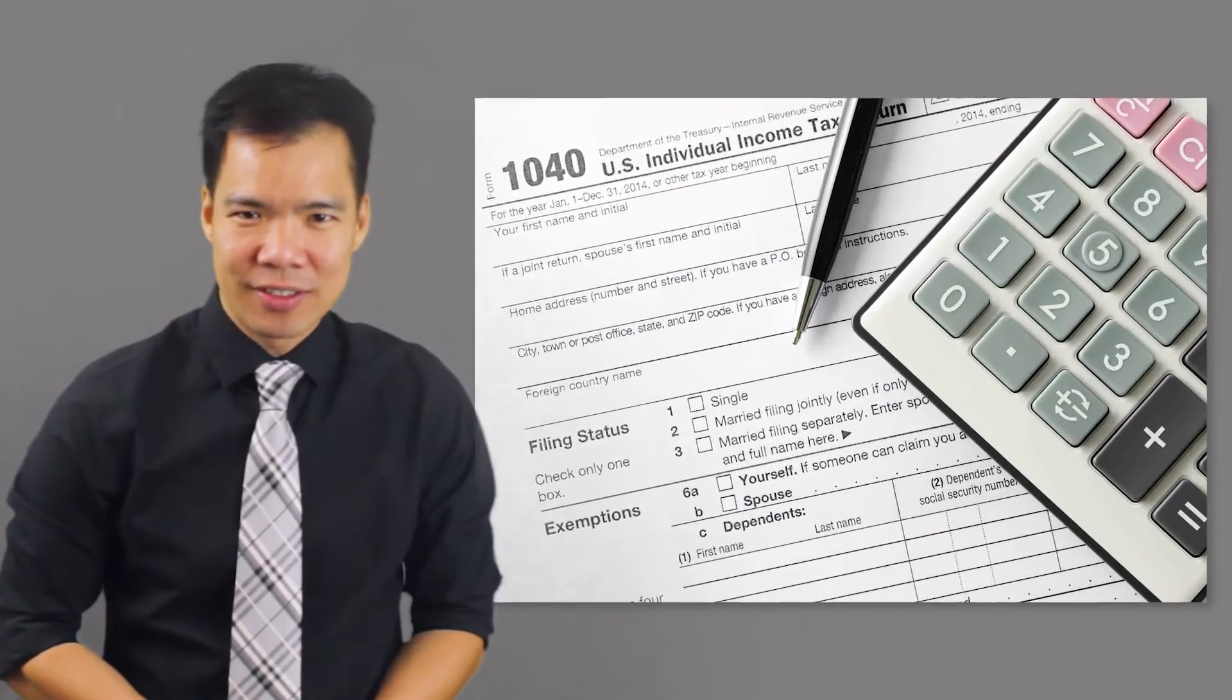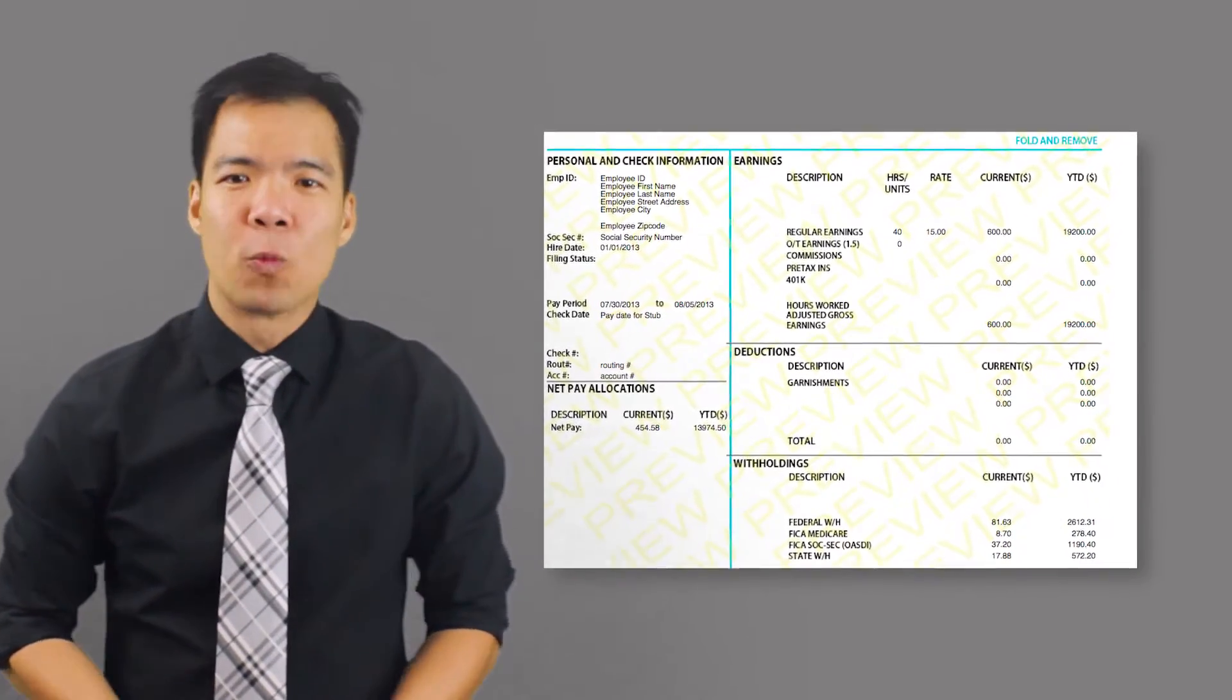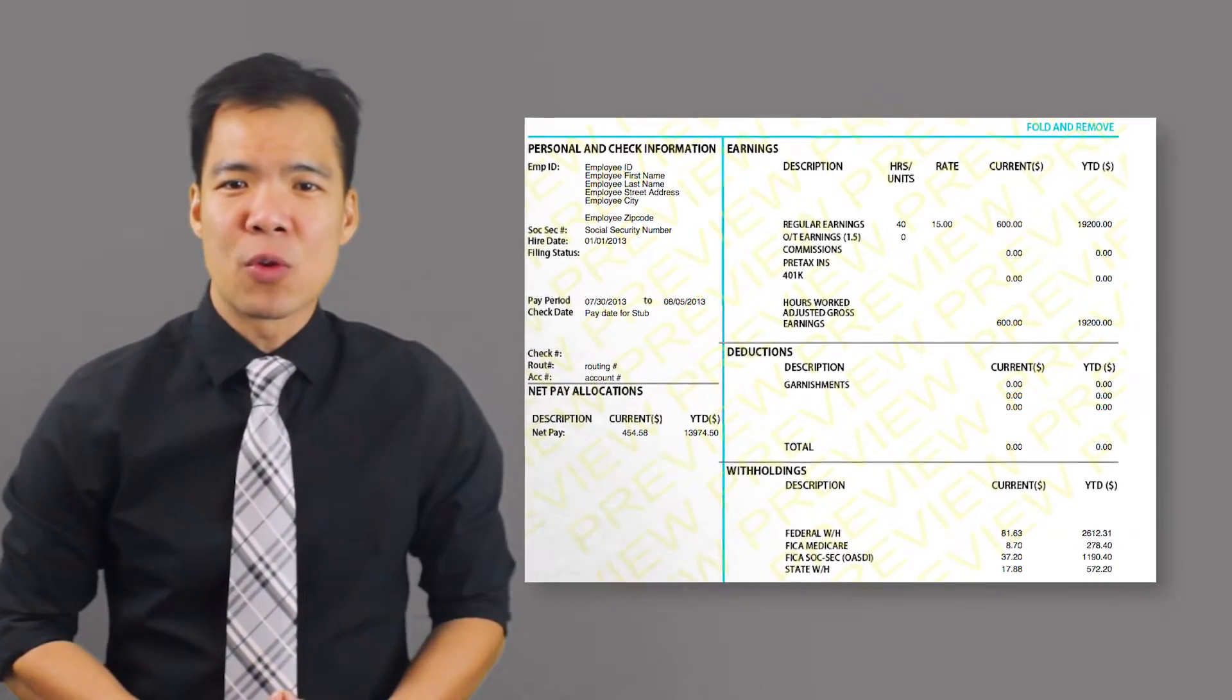two years tax return, and if you're employed under a company, two of the most recent pay stubs. With that info, your lender will tell you what amount they will lend you. Of course, some additional information might be required, but those are the main ones.